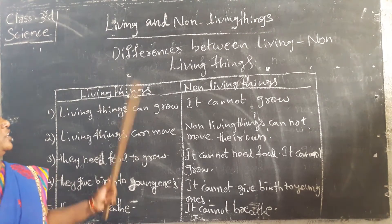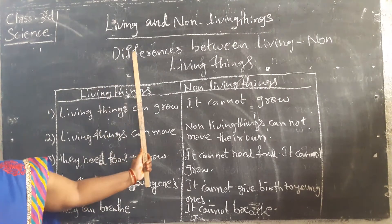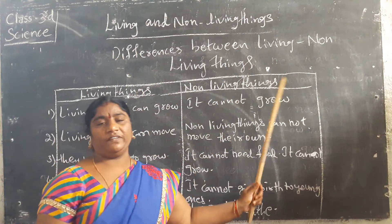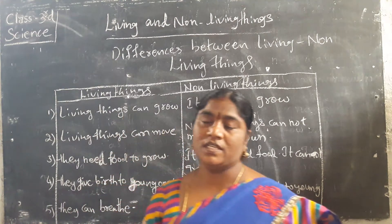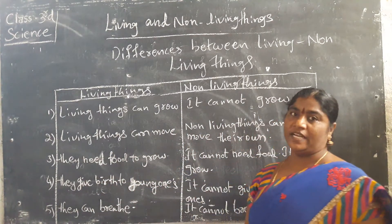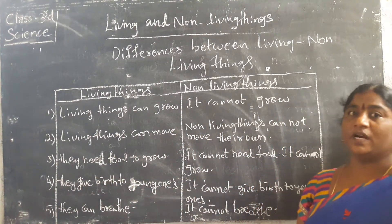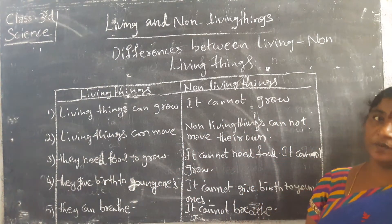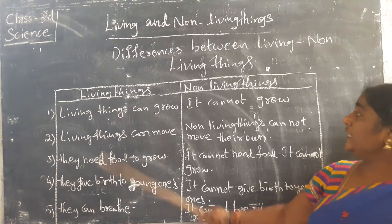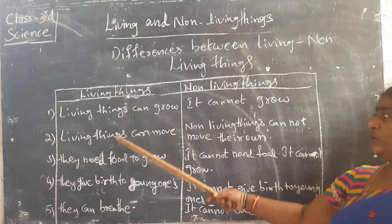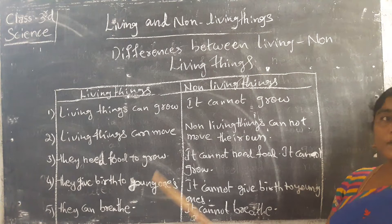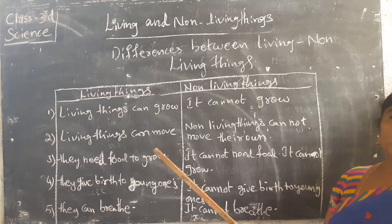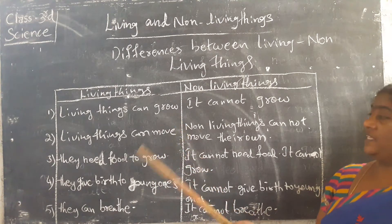Non-living things cannot die. Next, we have to learn about the differences between living and non-living things. We have to know what are the differences between living things and non-living things. We have to put a table on the board.